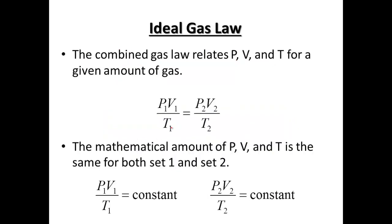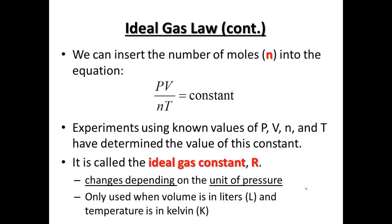So our ideal gas law to this point, the pressure, volume, and temperature of 1 is equal to pressure, volume, of temperature 2. Now, what we're going to look at is that either 1, pressure, volume, and temperature, since it's equal, is constant. Or pressure, volume, and temperature 2 is constant.